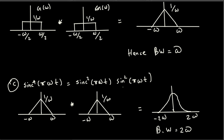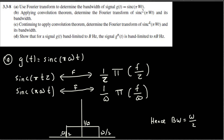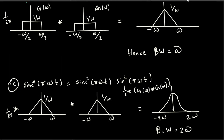The Fourier transform is given by (1/2φ) times the triangular spectrum convolved with itself — each step multiplied by 1/2φ. So the bandwidth is 2ω. This confirms: for a signal g(t) band-limited to B hertz, g^n(t) is band-limited to nB hertz.